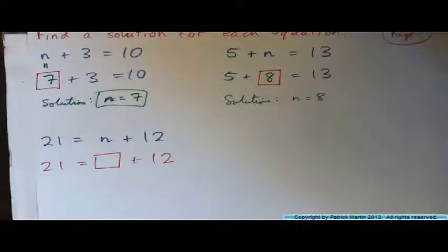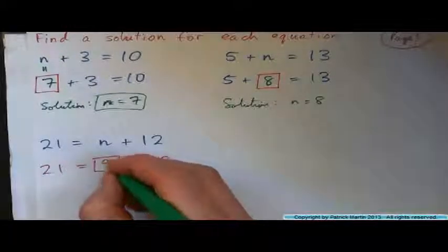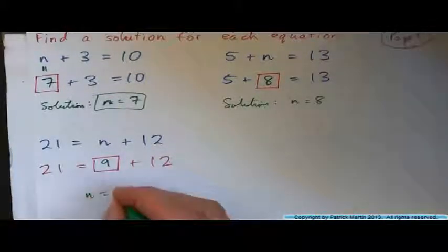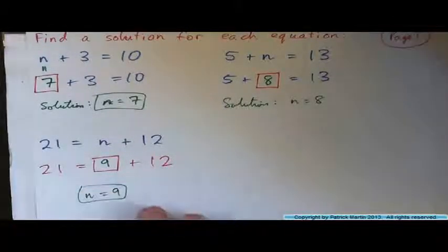Twenty-one equals what number plus twelve? Is it nine? Right. So the solution is n is nine, right?